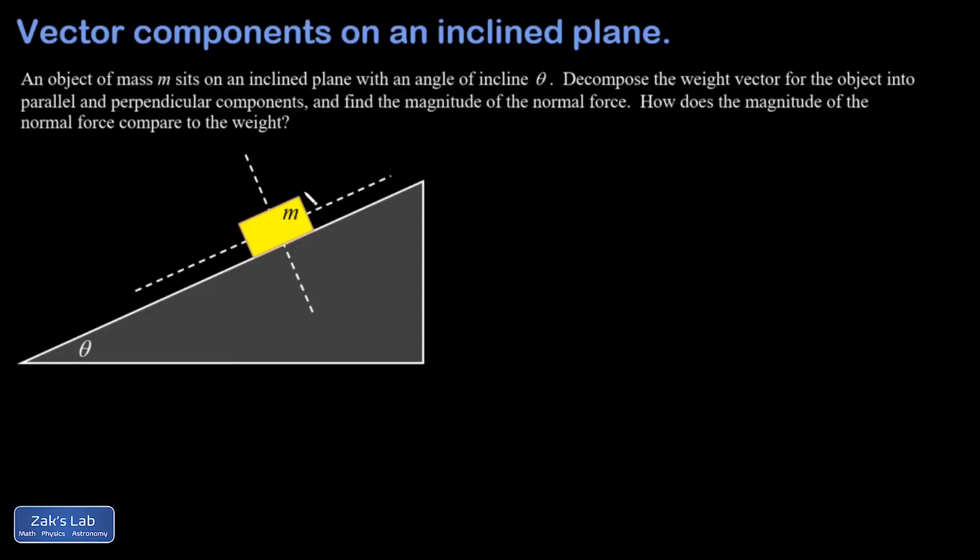In this video we're given a mass on an inclined plane with an angle of theta. We're asked to decompose the weight vector for the object into parallel and perpendicular components to the surface, find the magnitude of the normal force, and finally answer a concept question about how the magnitude of the normal force compares to the weight.